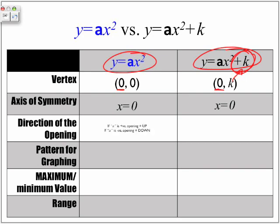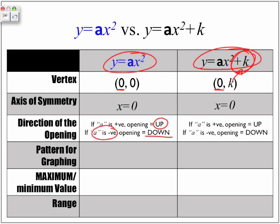Direction of the opening: if a is positive, the opening is up. If a is negative, opening is down. And that goes for both versions. In terms of the pattern, whatever our a value is multiplied by 1, 3, 5 for both versions.